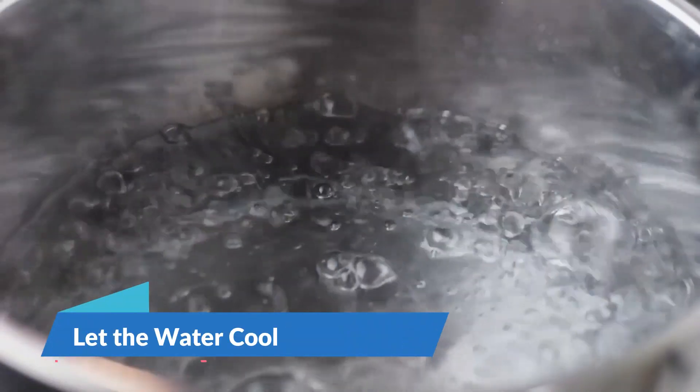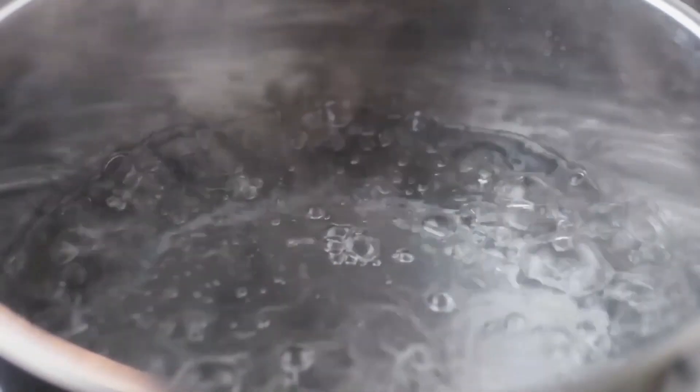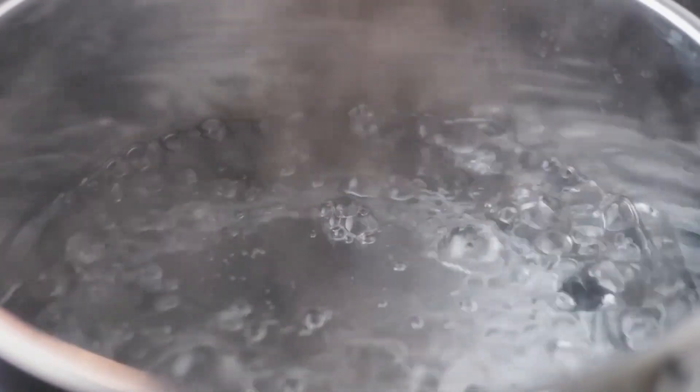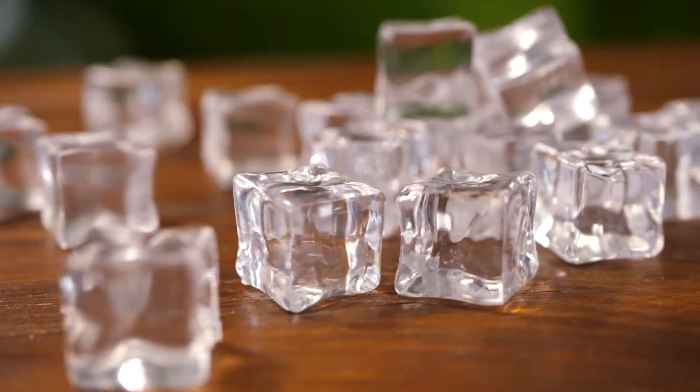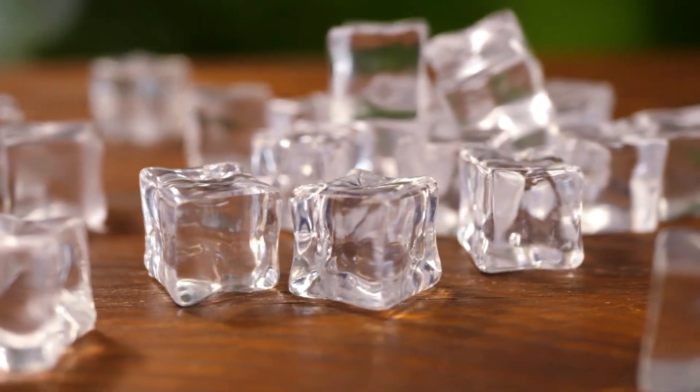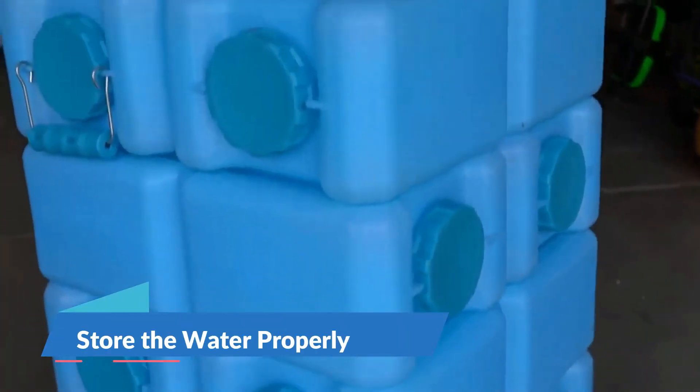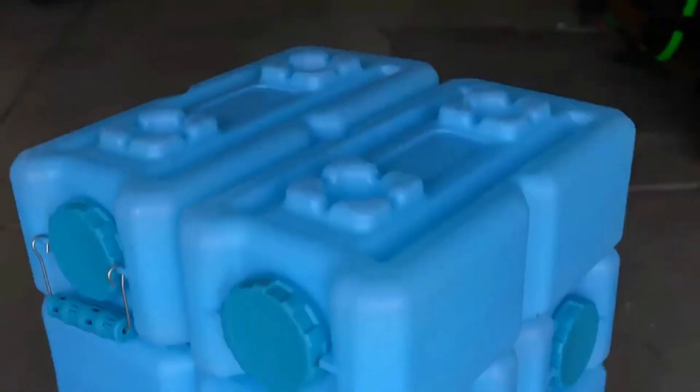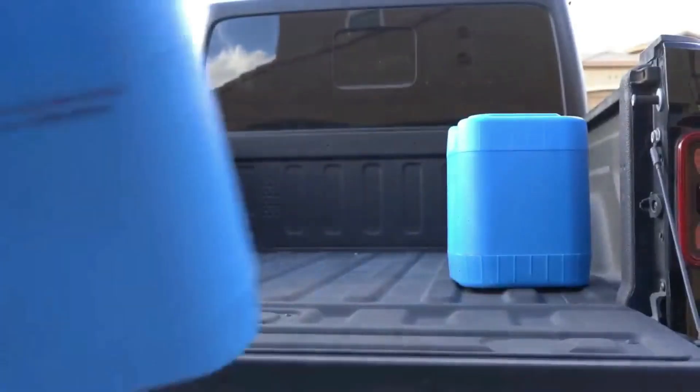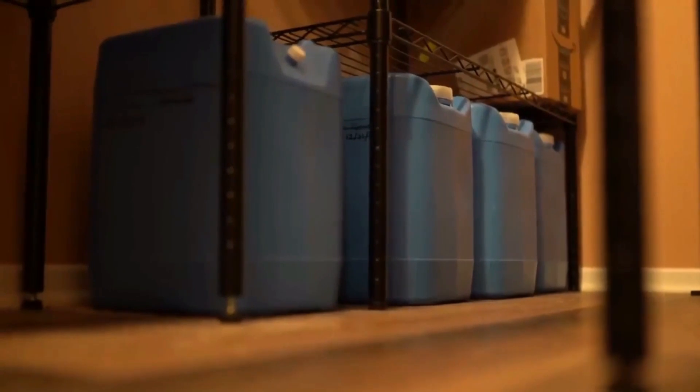Step 4: Let the water cool. After boiling, remove the pot from the heat source and allow the water to cool naturally. Avoid adding ice or placing the pot in cold water to hasten cooling, as this can reintroduce contaminants. Step 5: Store the water properly. Once cooled, transfer the water to clean, sanitized storage containers. Cover the containers to prevent recontamination.